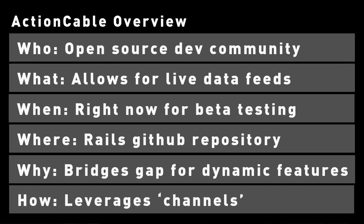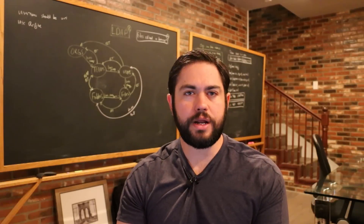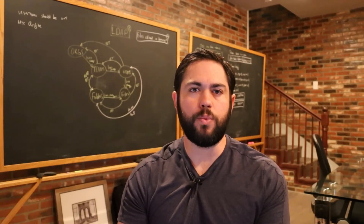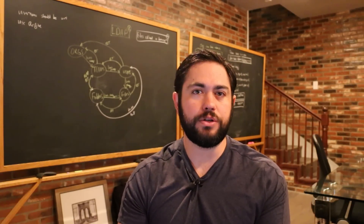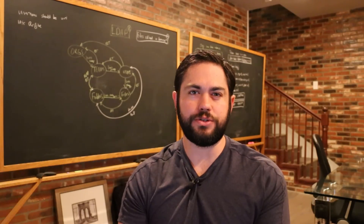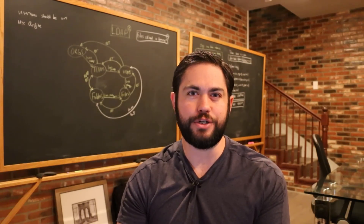Lastly, for the HOW: Action Cable creates the concept of channels, where you can perform asynchronous data transfers — both requests and responses — from within the application files with no page refresh. I hope this gives you a good idea of what Action Cable is and why it's so important for Rails 5. I've also included in the show notes some links to tutorials where you can go and create some real-time applications.